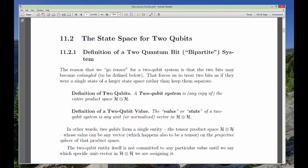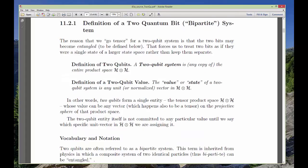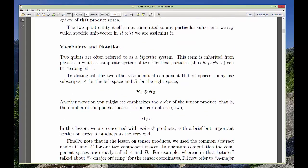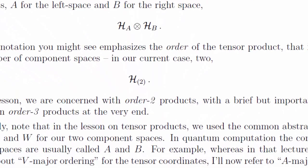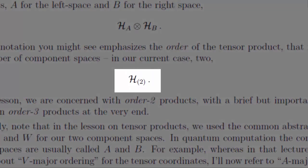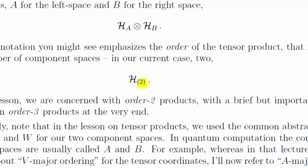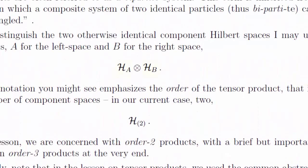I suppose that the last chapter spoiled a surprise. The state space that models a two-qubit system is the tensor product H times H. We'll designate it as H2, the second-order tensor product. Caution! That 2 does not indicate the dimension, which is actually 4. It's the order, the number of copies of H that we're multiplying together.